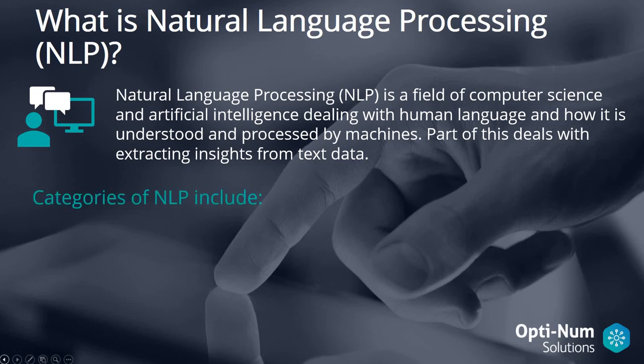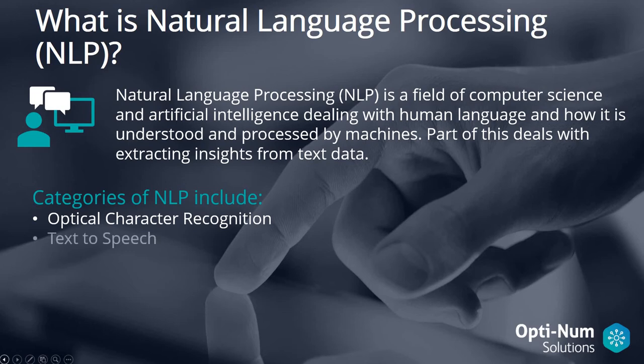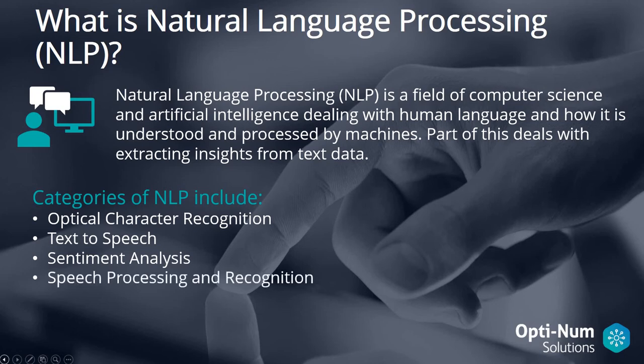These are a couple of the categories of Natural Language Processing. The first is optical character recognition, which is recognizing and interpreting text in images. We can also use machine conversion of written text into spoken language with text to speech. We can define if a statement is positive or negative using sentiment analysis. We can convert spoken language into text and perform voice and language recognition. And we can create bots which answer user questions in call centers or online forums.